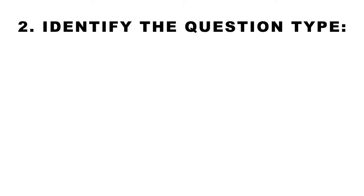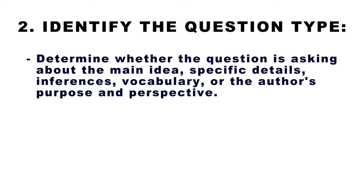In the second part I am going to give you examples and we are going to answer questions together. Number two that you must always keep in mind is to identify the question types. For example, determine whether the question is asking for the main idea, specific details, inferences, vocabulary, or the author's purpose and perspective.